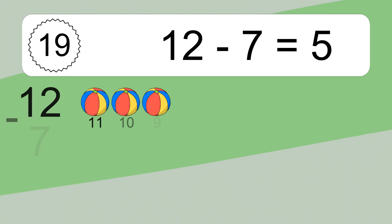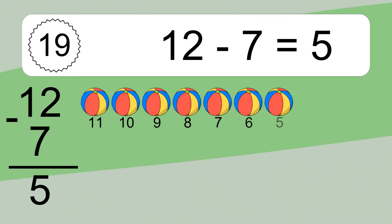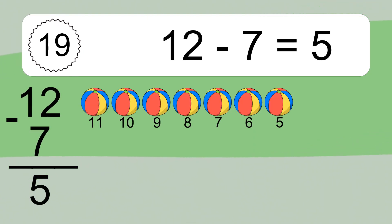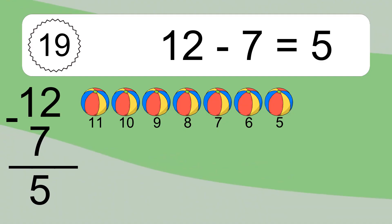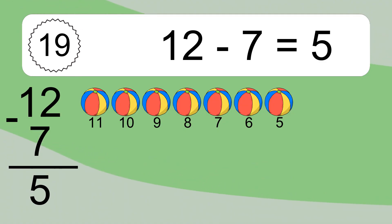12 minus 7 equals 5. Let's count it: 11, 10, 9, 8, 7, 6, 5. 3 minus 2 equals what?